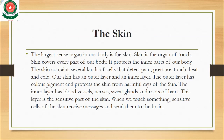The next important sense organ is the skin, which is made up of dead cells. The skin is the largest sense organ in our body and covers every part of your body. The main work of the skin is to protect the inner parts of our body. It consists of different kinds of cells that detect your pain, pressure, touch, heat, and cold.